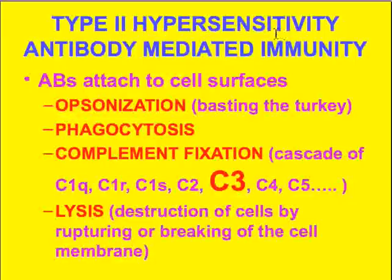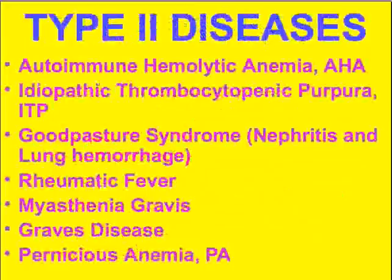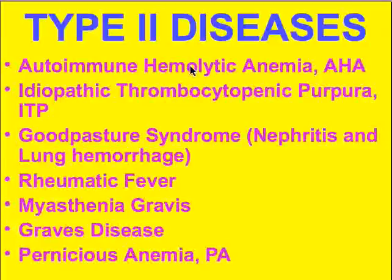In type two hypersensitivity the end result is often lysis — the destruction or breaking down of cells by virtue of the antibodies fixing complement, actually causing breaking of the cell membrane and therefore cell rupture and ultimately lysis or dissolving of the cell. In type three diseases we also have situations where antibodies attack cells directly; for example, in autoimmune hemolytic anemia antibodies attack the surface of red cells.